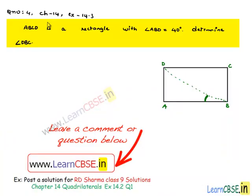Now, let us discuss question number 4, chapter 14, exercise 14.3. ABCD is a rectangle with angle ABD equal to 40 degrees. Determine angle DBC.